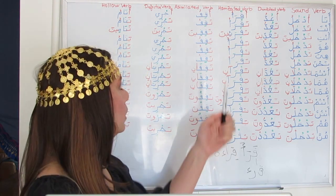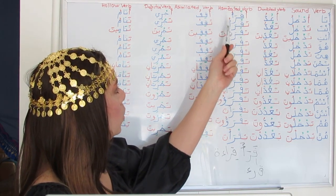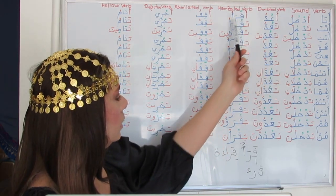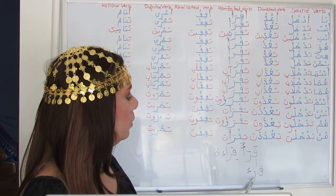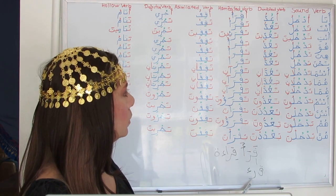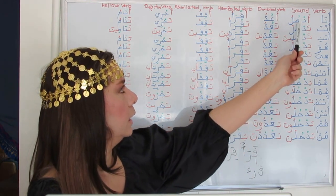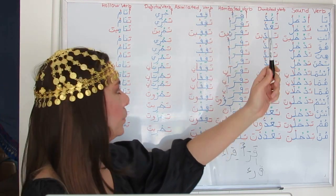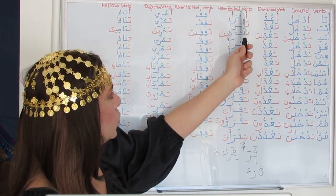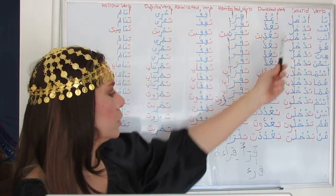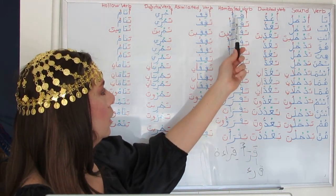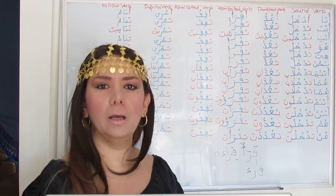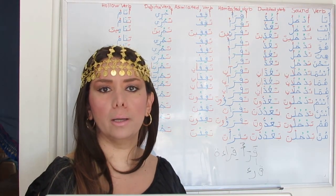For ana: A — Aq — Ra — U. This time we have a Fathah on top of the middle radical, not a Dhamma as in dakhala — it's random. Sukun on the first radical and Dhamma at the end. Ana aqra'u — I am reading or I read.